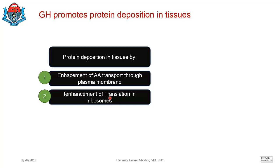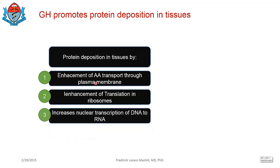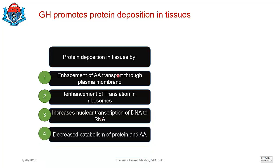Third, growth hormone increases nuclear transcription of DNA to RNA — taking the genetic code from DNA into messenger RNA — and growth hormone facilitates this transcription process as well. Fourth, growth hormone decreases the catabolism of protein and amino acids. So while growth hormone is building new protein, it is also preventing the breakdown of already-built protein. The net effect is a buildup of protein.